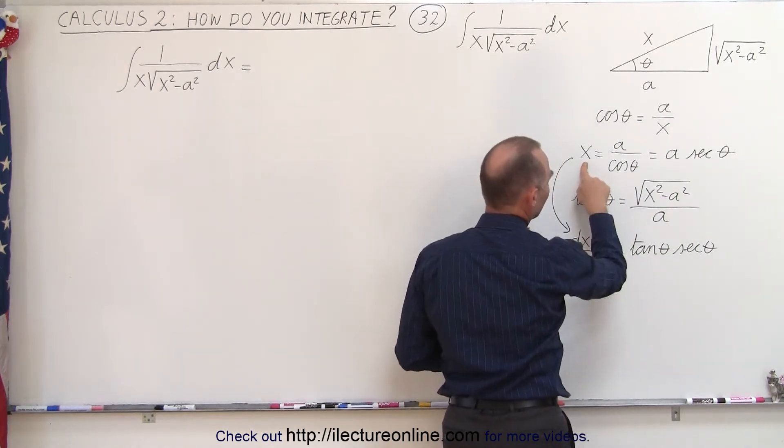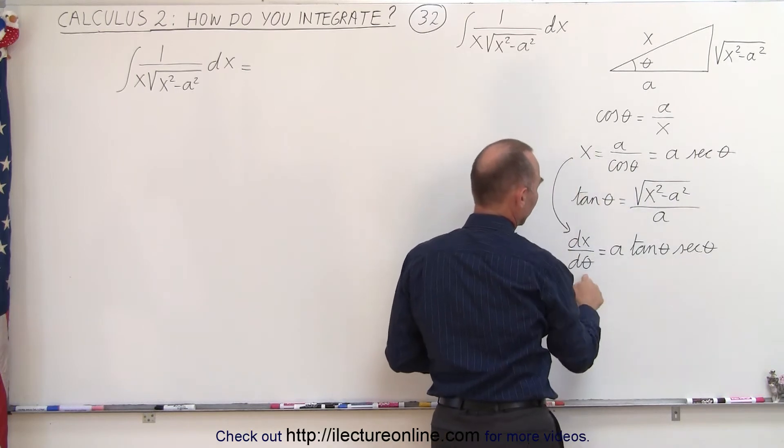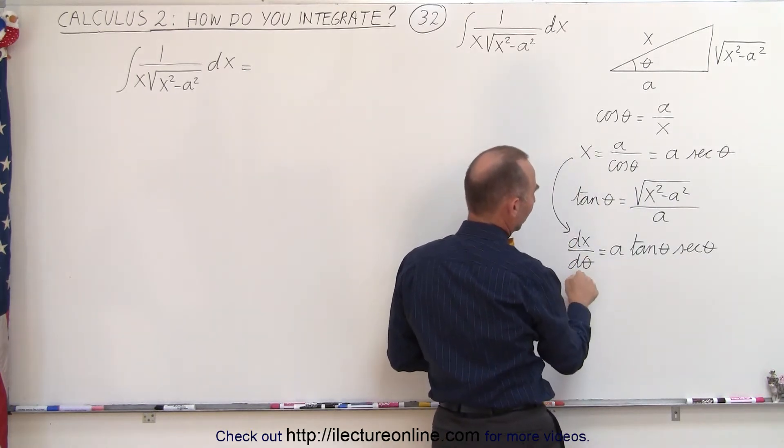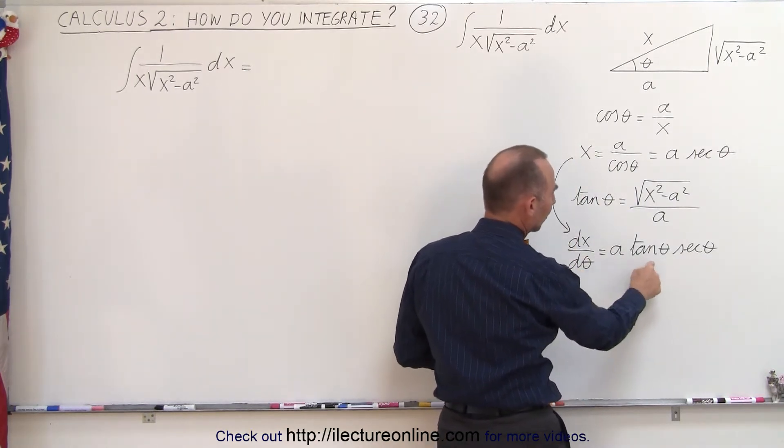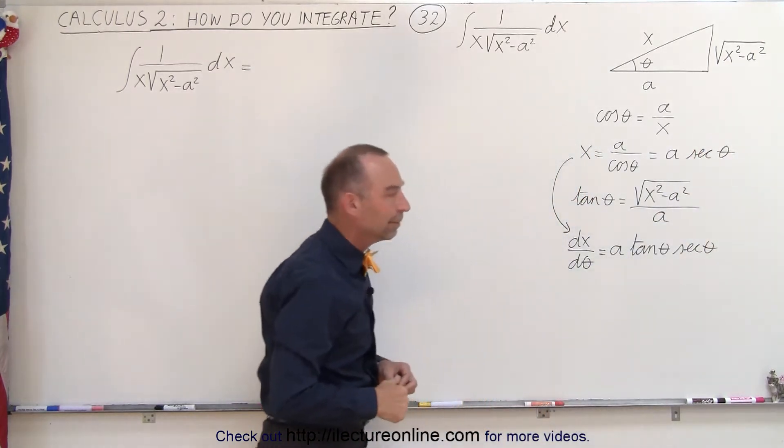We can solve for x, and x now becomes a times the secant of theta, and if we take the differential or the derivative of that, we have dx over d theta equals a tangent of theta times the secant of theta, which is the derivative of a secant of theta.